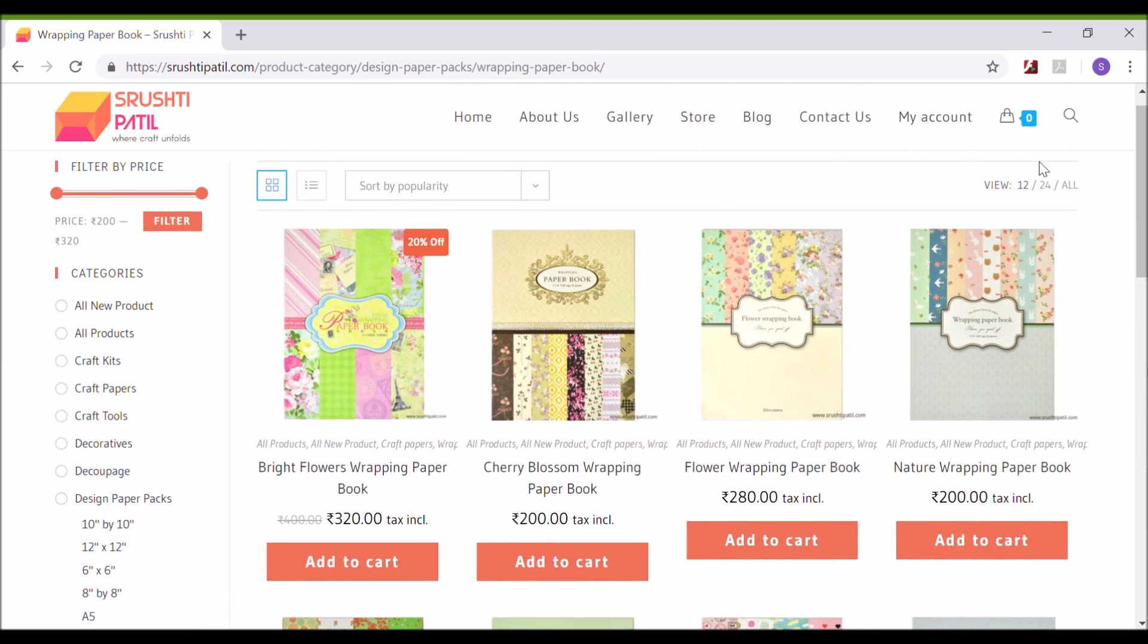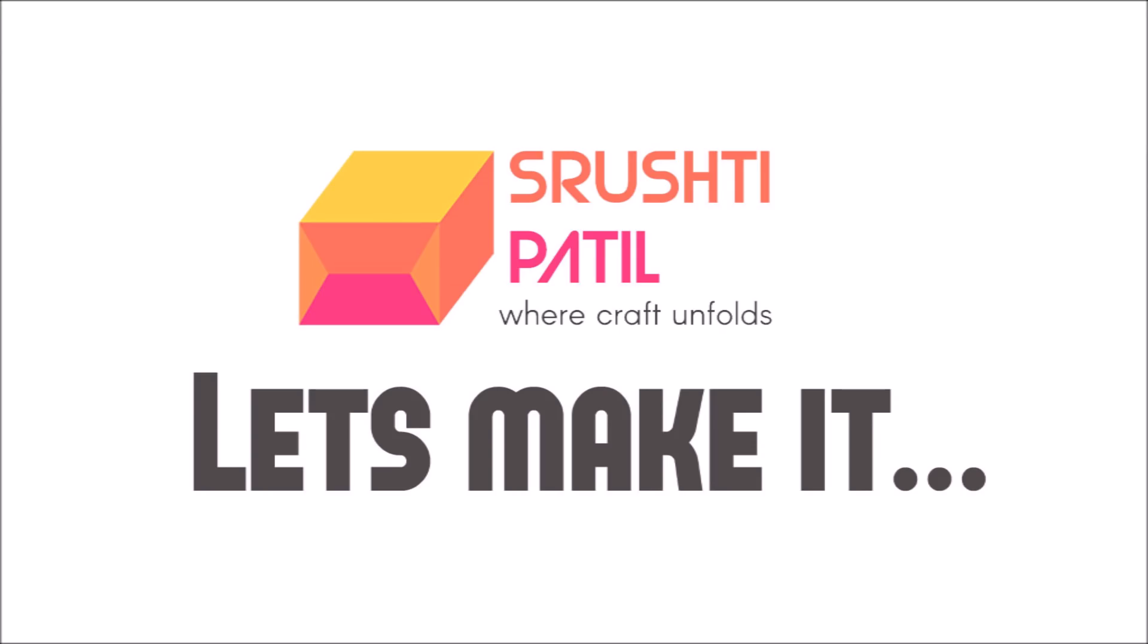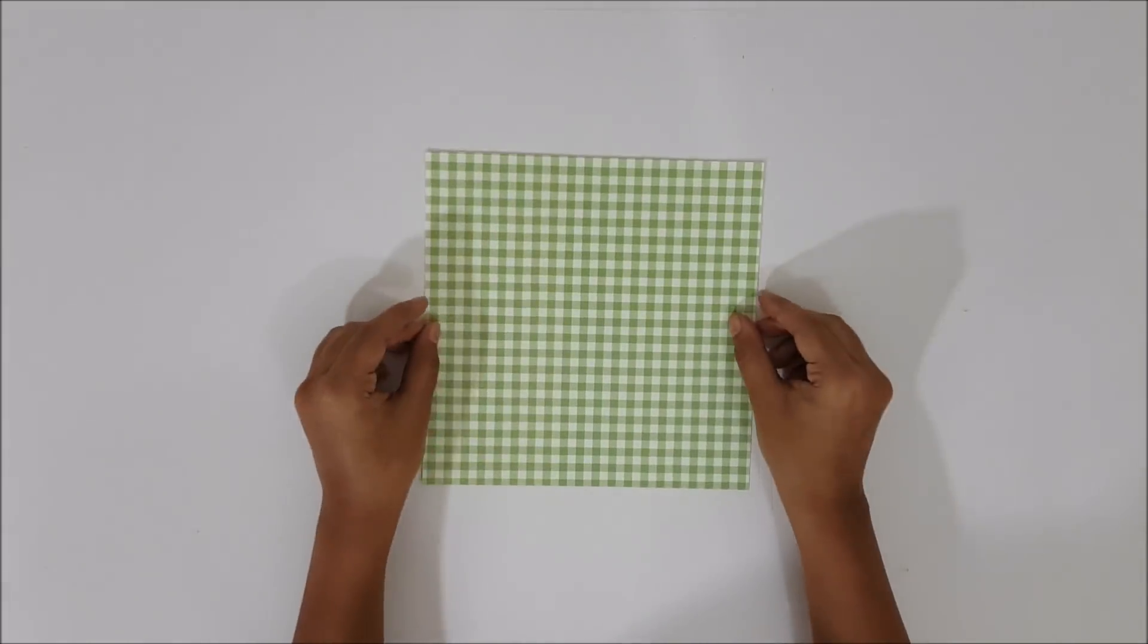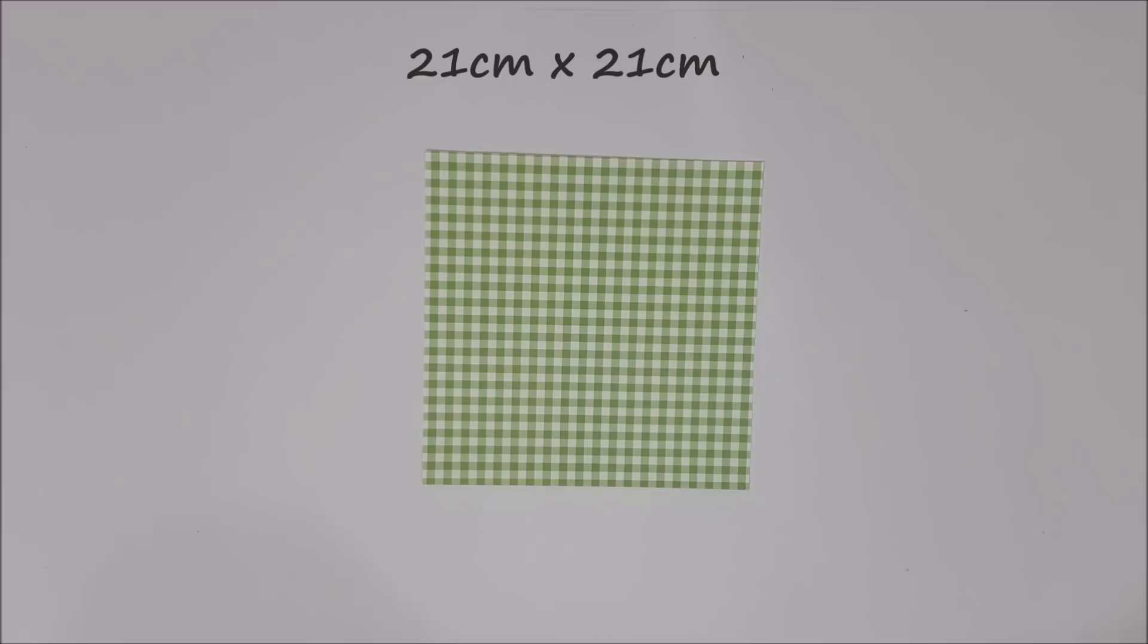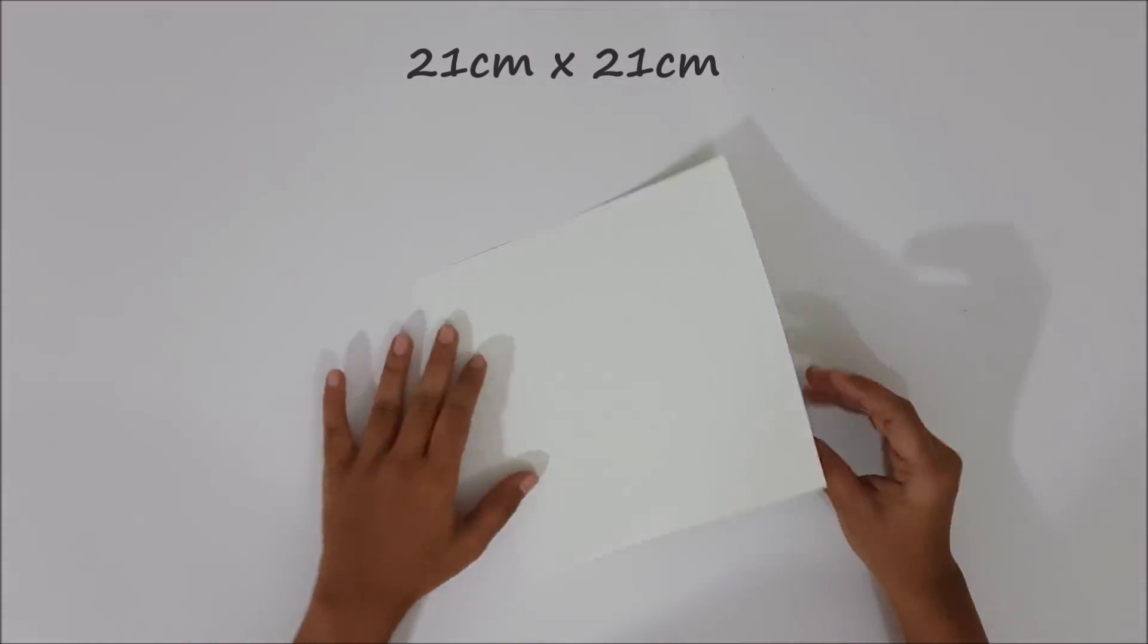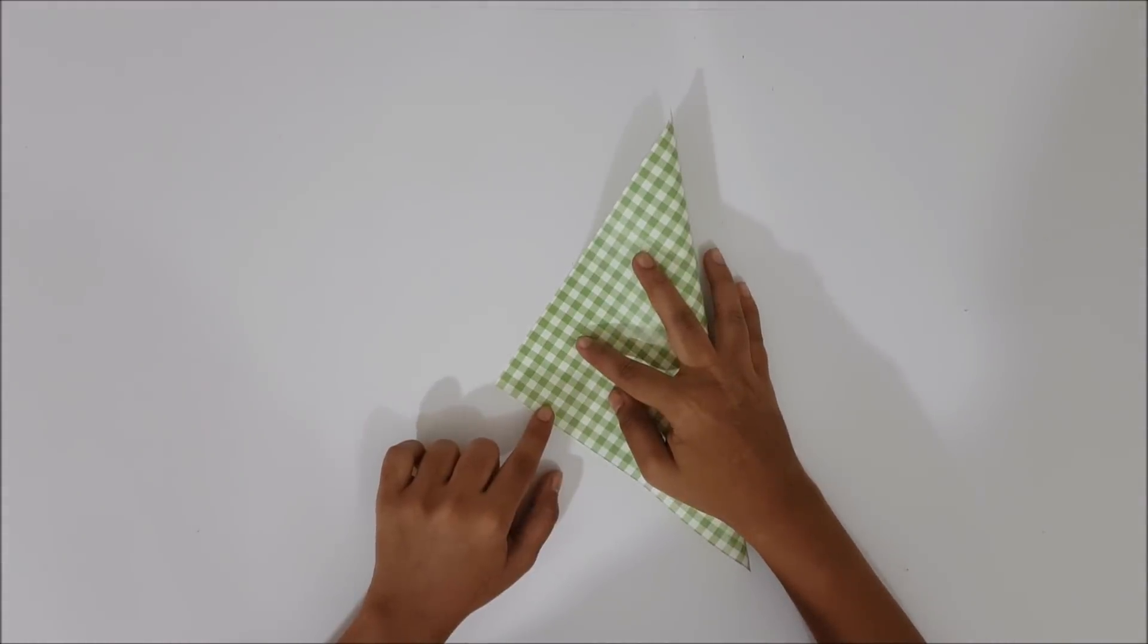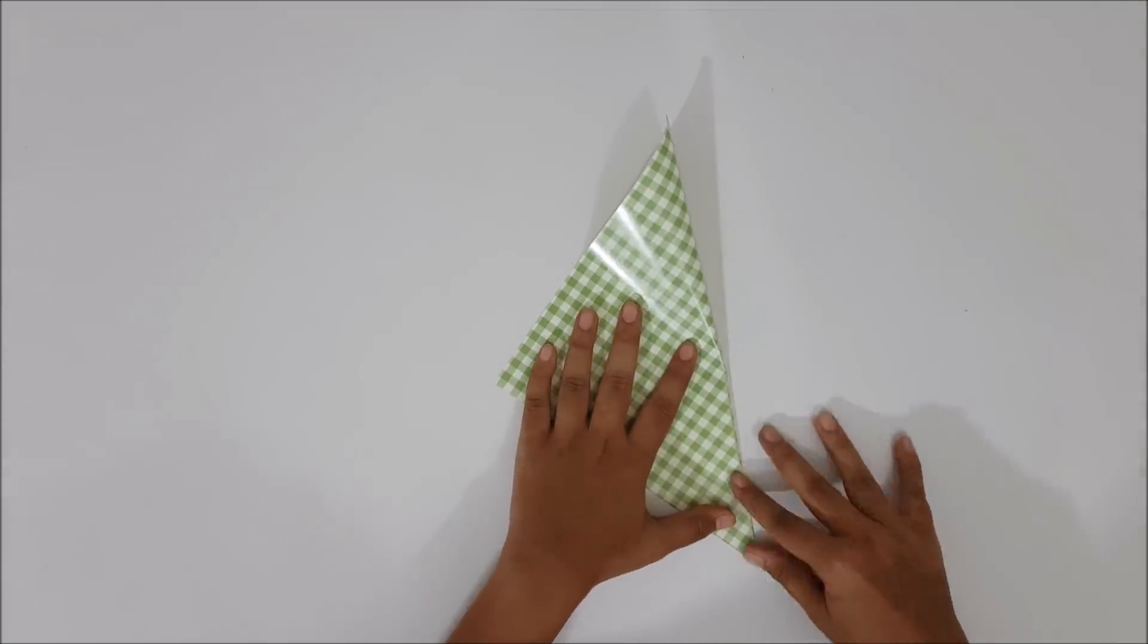Now let's move towards today's tutorial video. First take a square piece of paper that measures 21 centimeter by 21 centimeter. Fold it in half diagonally and crease the folds properly using a bone folder.